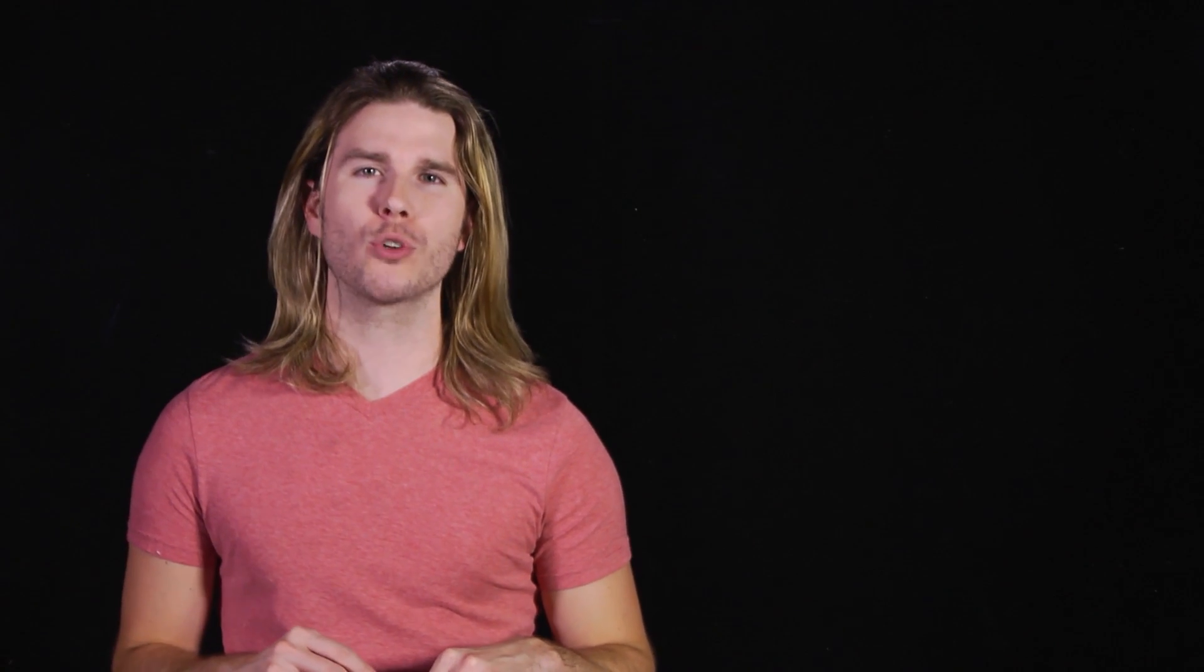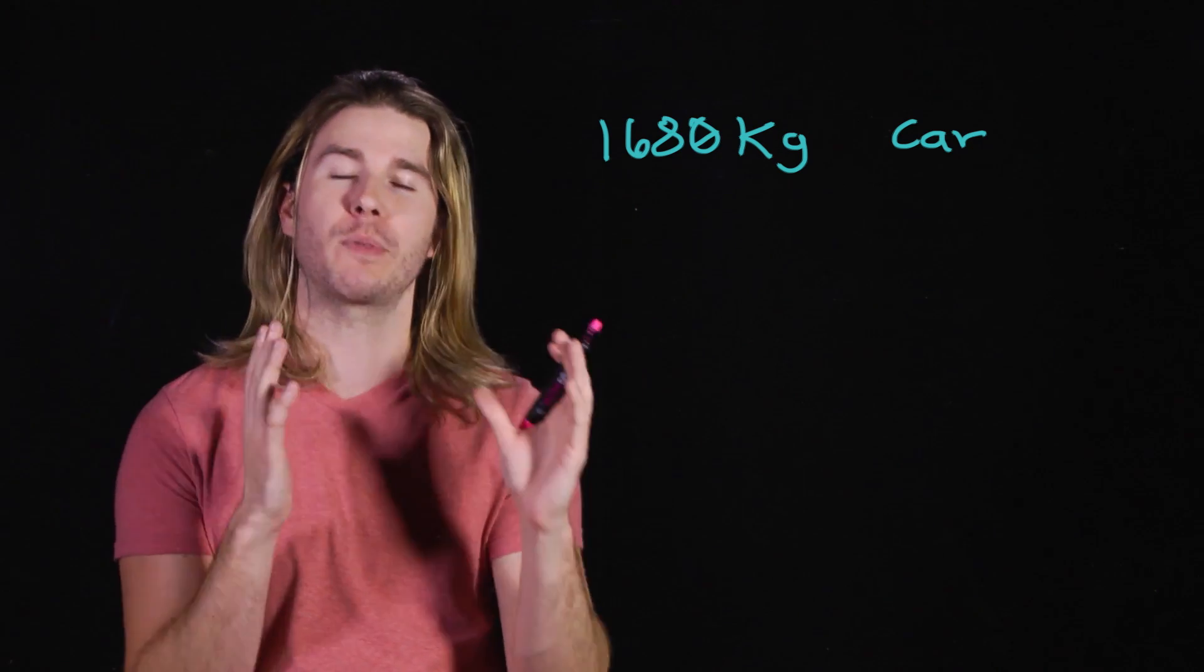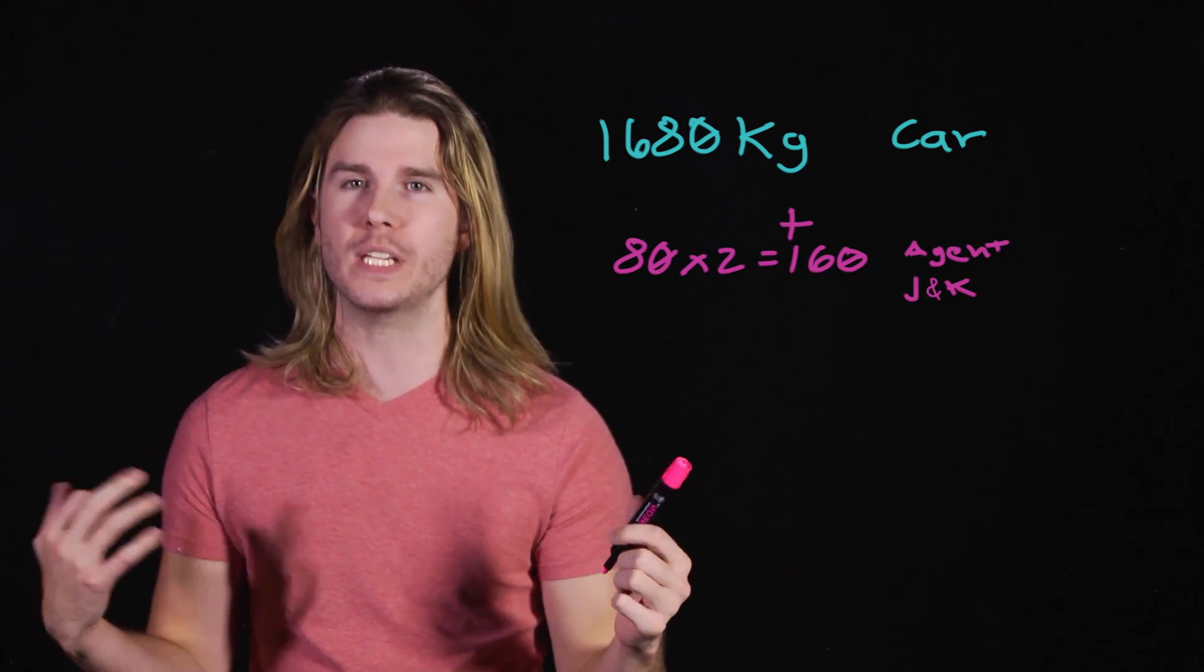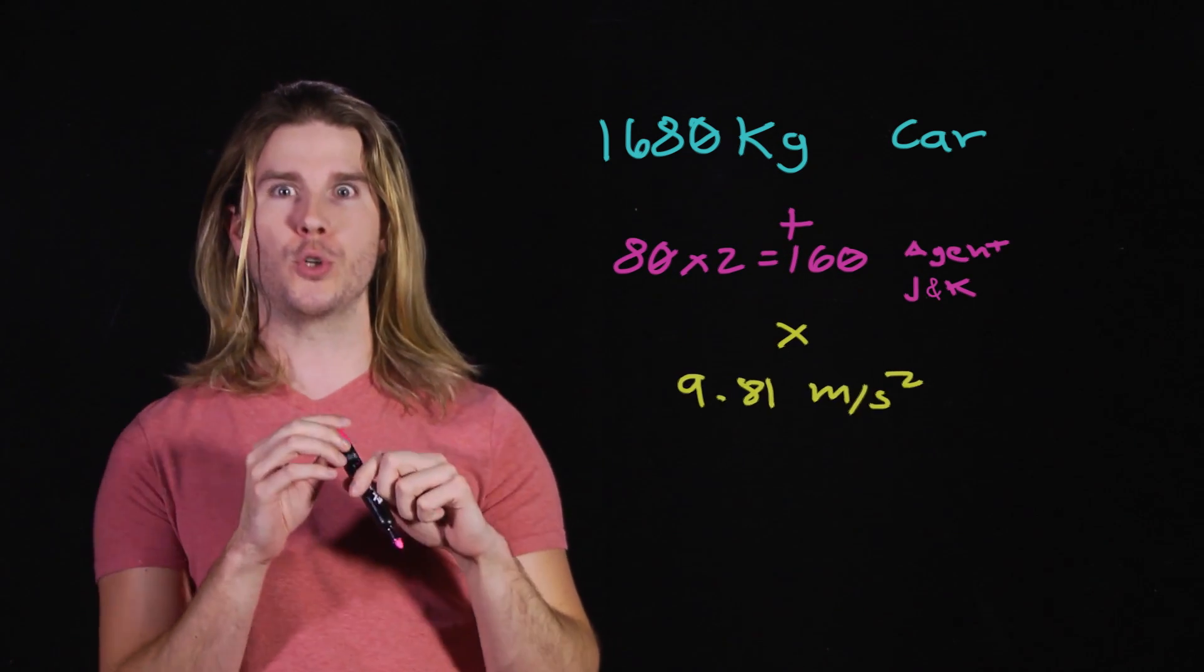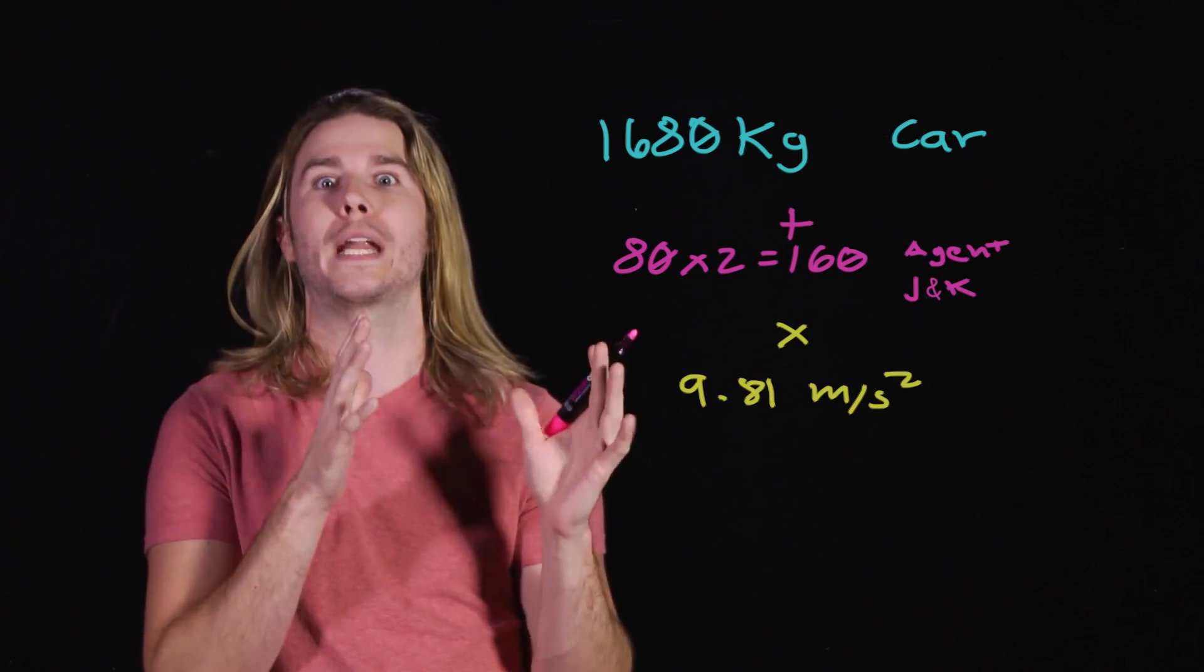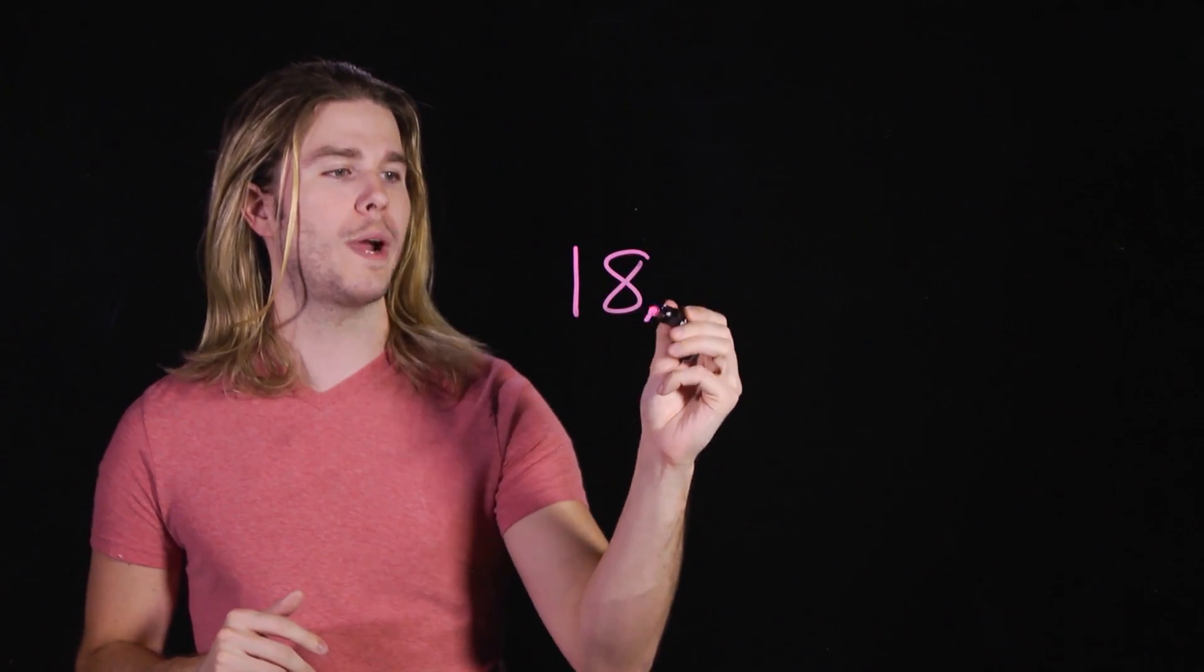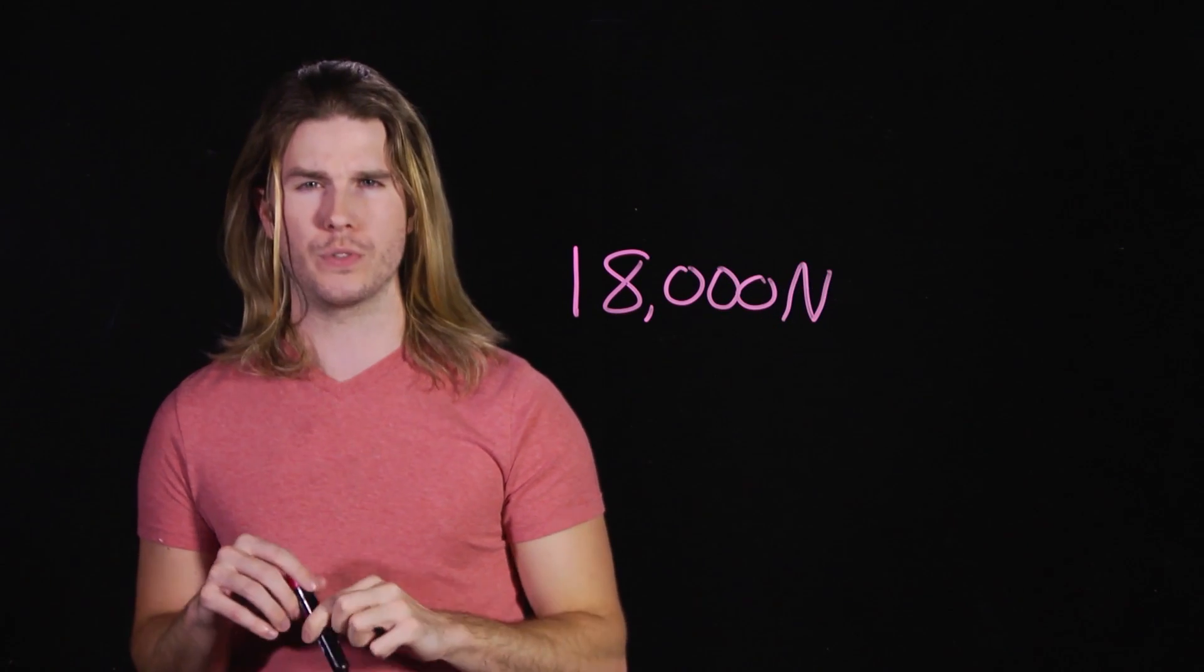We can also look up the mass of a 1987 Ford Crown Vic Limited to get some kind of idea of how much thrust the rockets will need to provide to keep the car pinned to the ceiling. And if J and K are maybe 80 kilograms each, then using this combined mass and multiplying it by the acceleration due to gravity on Earth, which is 9.81 meters per second per second, we get a total weight that the rockets have to keep up of around 18,000 Newtons.